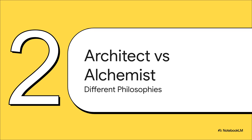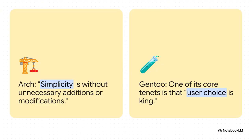We're going to explore those philosophies through a simple but really powerful metaphor. Think of it like this: Arch is the architect. Its whole philosophy is about elegant simplicity — it gives you these high-quality, prefabricated parts and a really clean blueprint to work from. Gentoo, though? Gentoo is the alchemist. Its whole mantra is that user choice is king. This means you get the raw, fundamental elements and the secret knowledge to transmute them into whatever you can dream up.